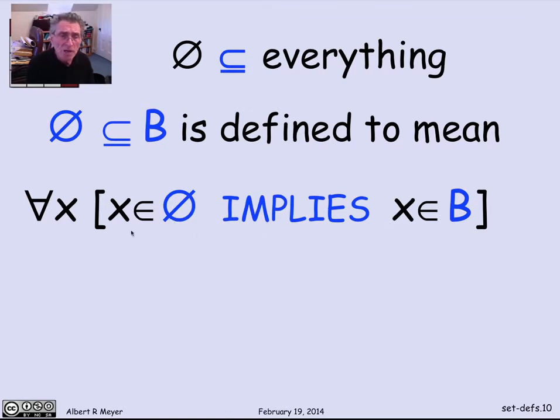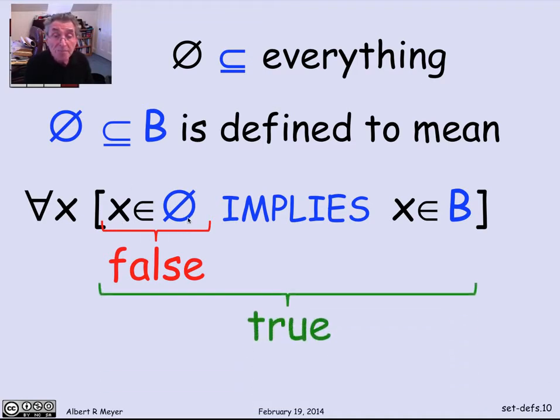Well, what do we know about this? The assertion that x is in the empty set is false. No matter what x is, there's nothing in the empty set. And now I have an implication that implies where the left-hand side, the hypothesis, is false. That means that the whole implication is true. And it doesn't depend on what B is.